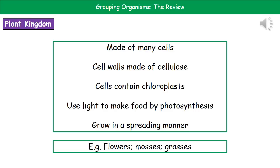If we consider the plant kingdom first, the organisms within it share certain features. They're made of many cells, they've got cell walls made of cellulose, they contain chloroplasts within their cells, they use light to make food by photosynthesis, and they grow in a spreading manner. Examples include flowers, mosses, and grasses.